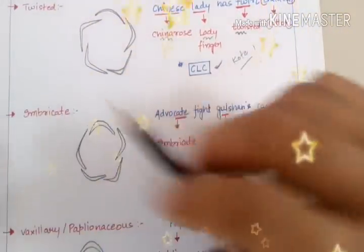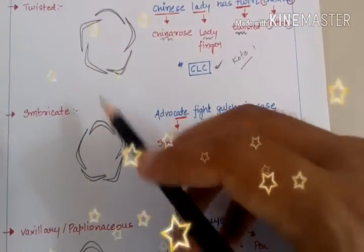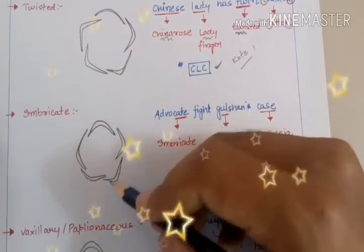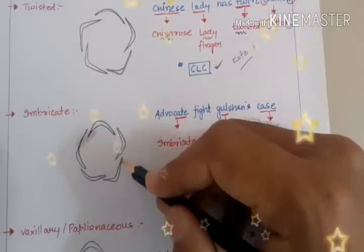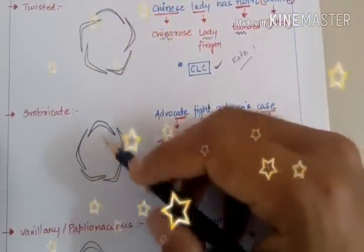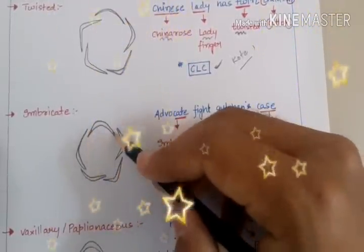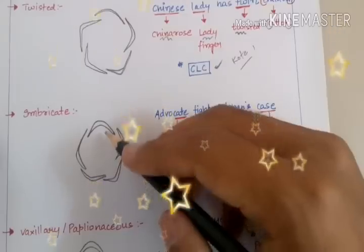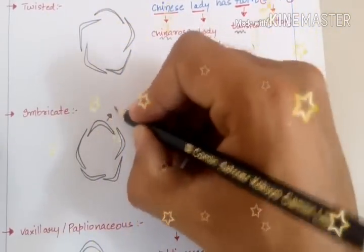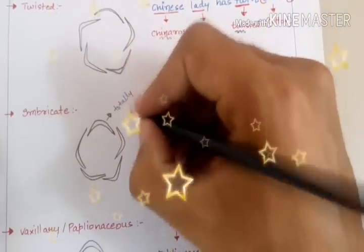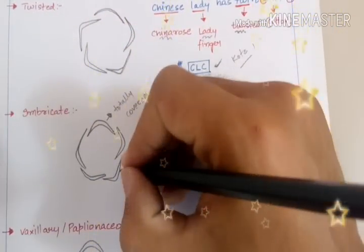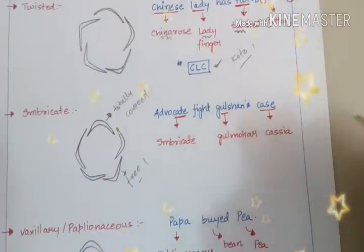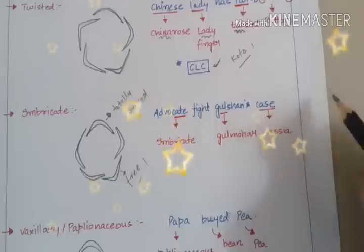The next kind of Estivation is Imbricate Estivation. In this Estivation, one sepal will be covered by other ones at both ends, and one sepal will have both ends free. These particular ends are covered by other ones, and one is totally free. All of them have a twisted arrangement, but one is totally covered and one is totally free.